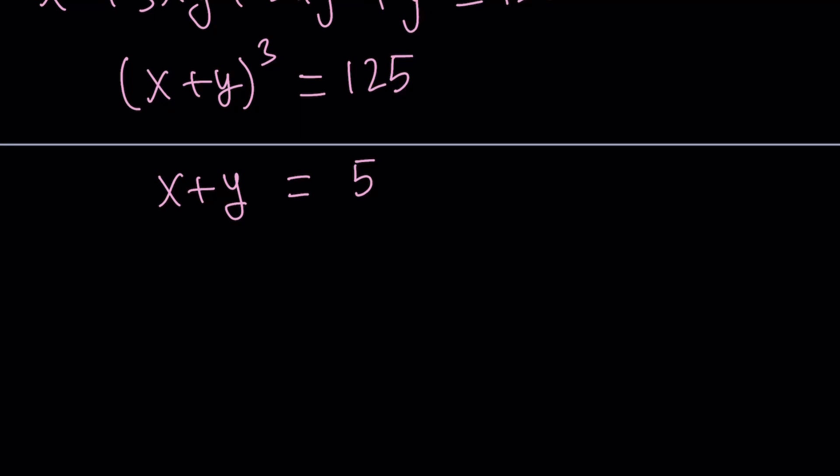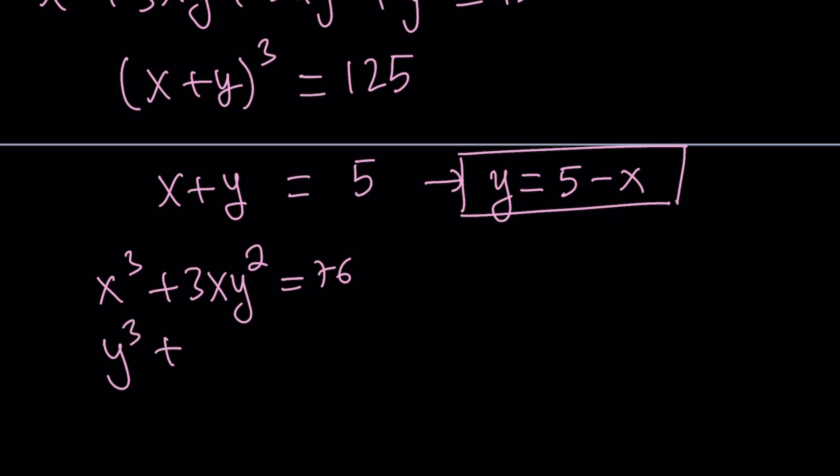Now from here, we can do the following. We can go ahead and just isolate one of the variables, say y, and write it as 5 minus x, and then go ahead and substitute this in one of the equations. That's what we're going to do. And to remind you what the original equations are, we had x cubed plus 3xy squared equals 76, and y cubed plus 3x squared y equals 49.